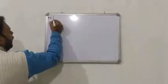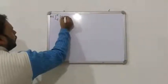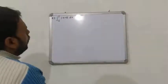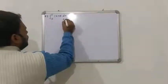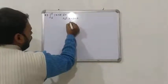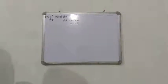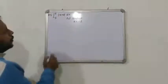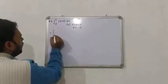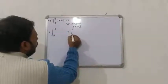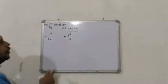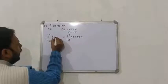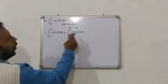Question number 5: integral from −5 to 5 of |x + 2| dx. اس طریقے کے سوالوں میں سب سے پہلے ہم نے put کیا: x + 2 = 0, x = −2. اب یہ integral دو parts میں break ہو جائے گی: ایک −5 سے −2، اور ایک −2 سے 5.